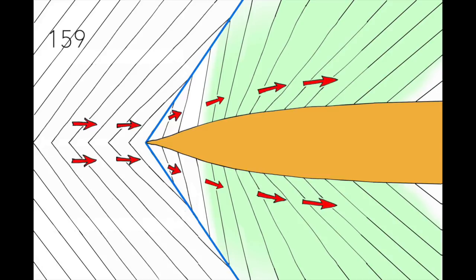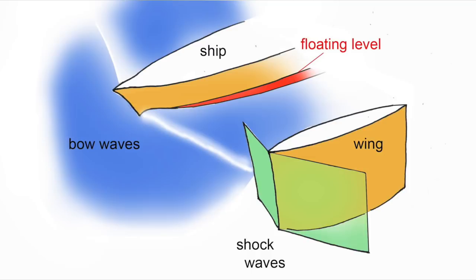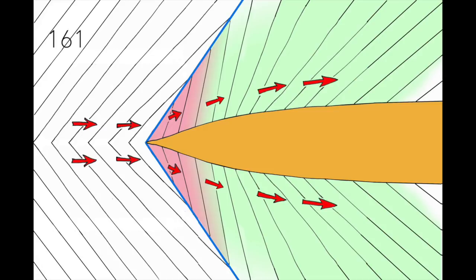In a free surface liquid flow, the analog of the pressure and density is the level of the water. This explains why the level of the water is lower than the floating level on the side of the ship. In pink, we see the area where the level of the water is higher and where the density and pressure of the gas is higher.